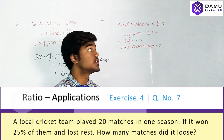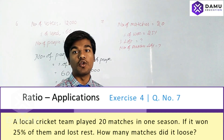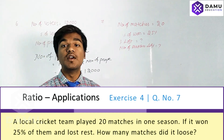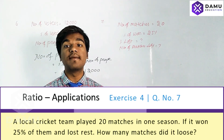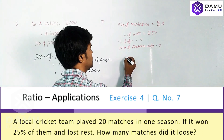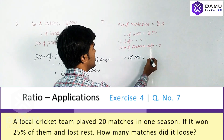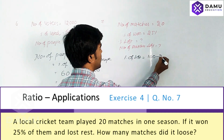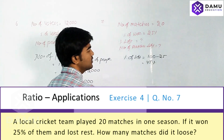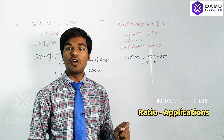Next problem: a team played 20 cricket matches and won 25% of them. We need to find the loss percentage. Percentage of losses equals 100 minus 25, which is 75%. So they lost 75% of their matches.